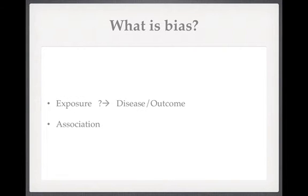Studies tend to ask how does exposure relate to disease or outcome, and many of the studies that we have read or have been involved in will look at this. Is there a link between a drug and a particular disease, or is there a link between an environmental factor and a particular outcome, or perhaps a link between a disease as an exposure and a different health outcome, or a link between a personal characteristic like body mass index and a particular disease? We look for these associations and typically we get excited when we find one.